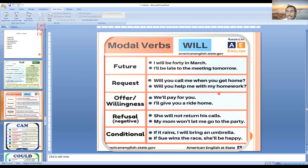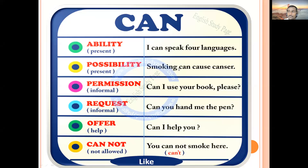Let's move to the next modal verb: 'can'. Can is very important and we use it in various day-to-day situations. First, it expresses ability — what you can do in the present tense. Think about what abilities you have. For example: 'I can speak four languages.' Let's think about what you can do and give some examples.